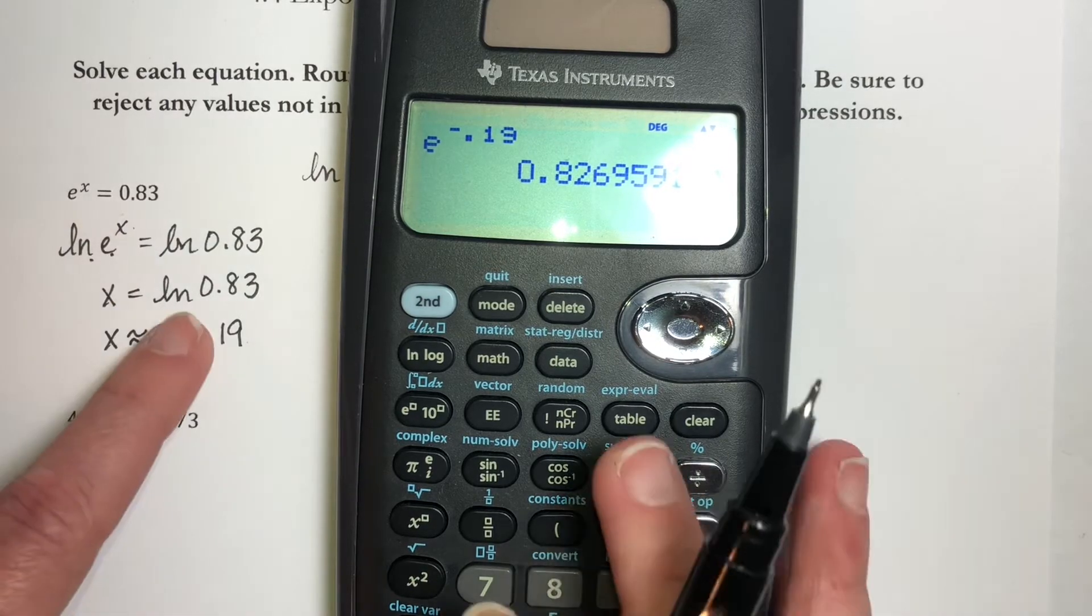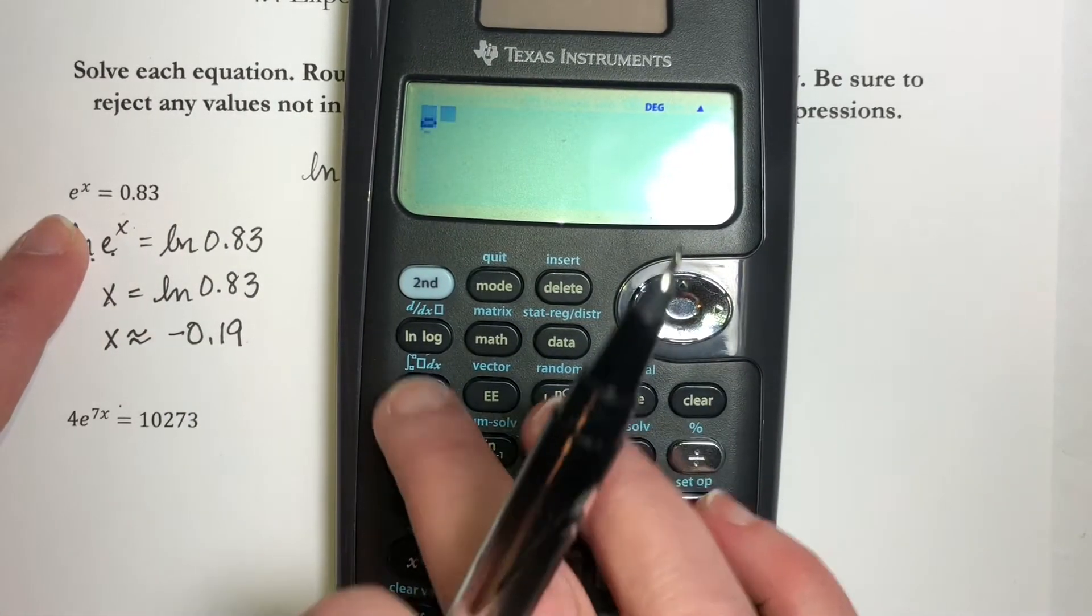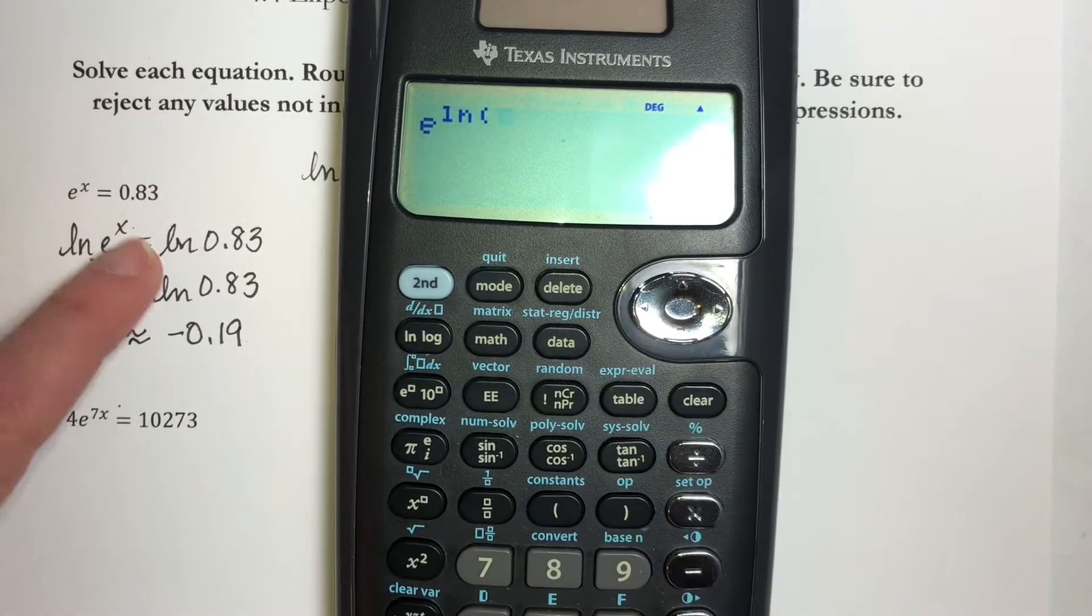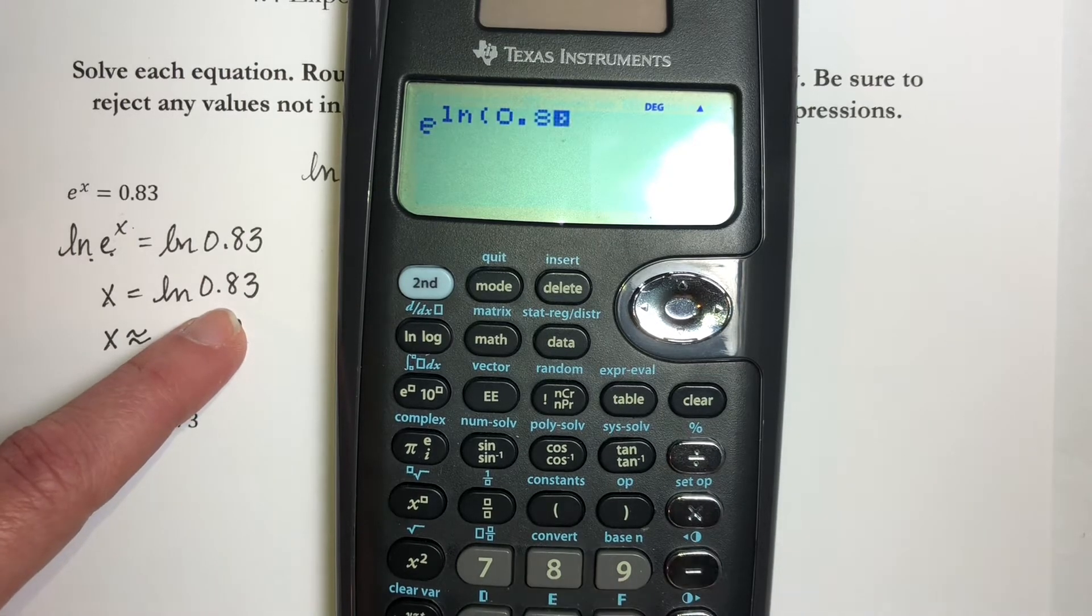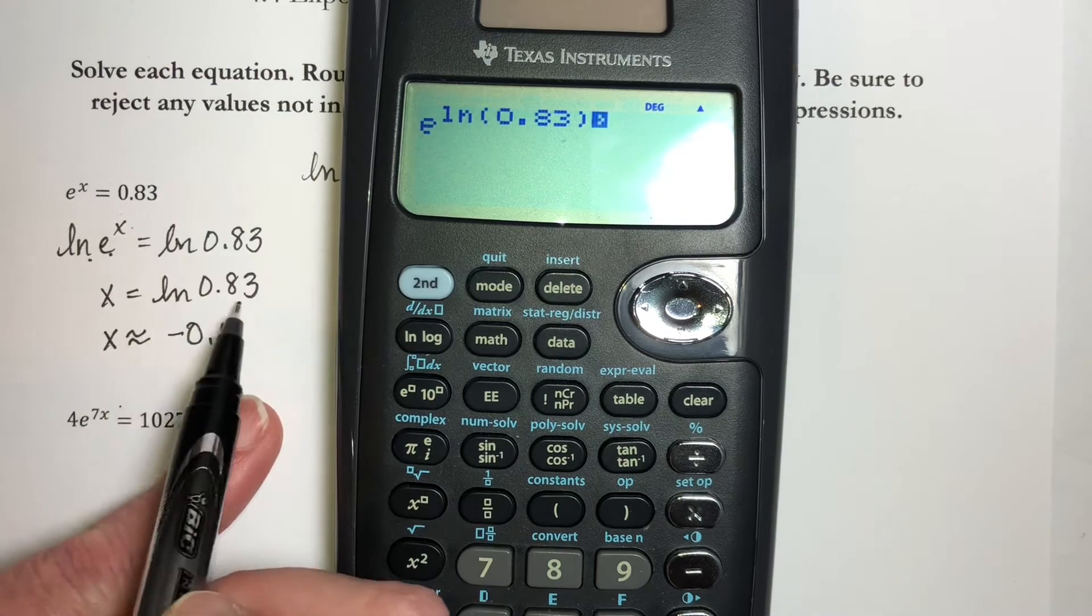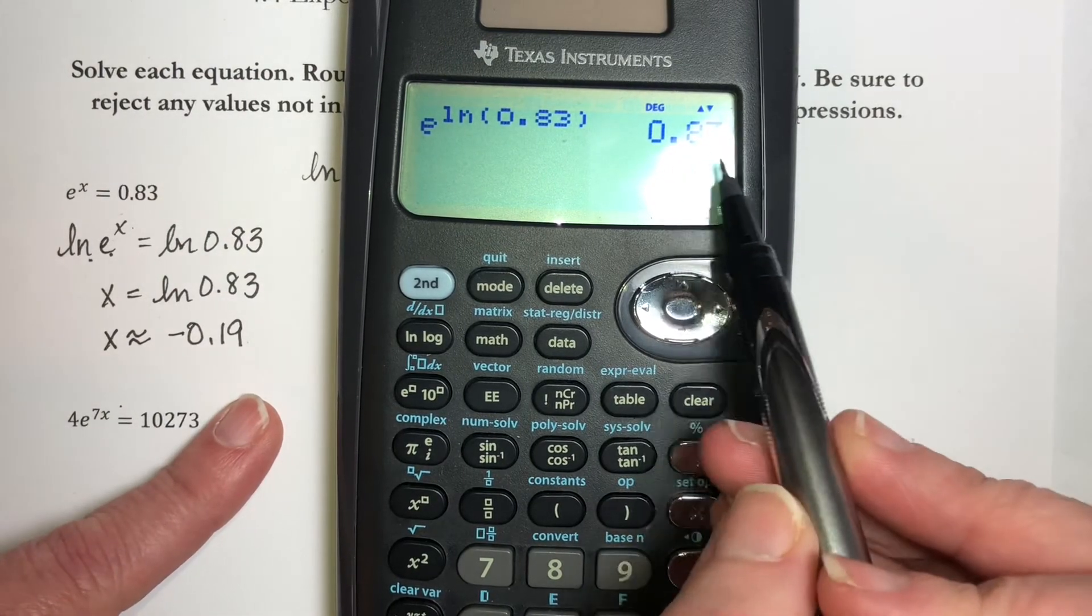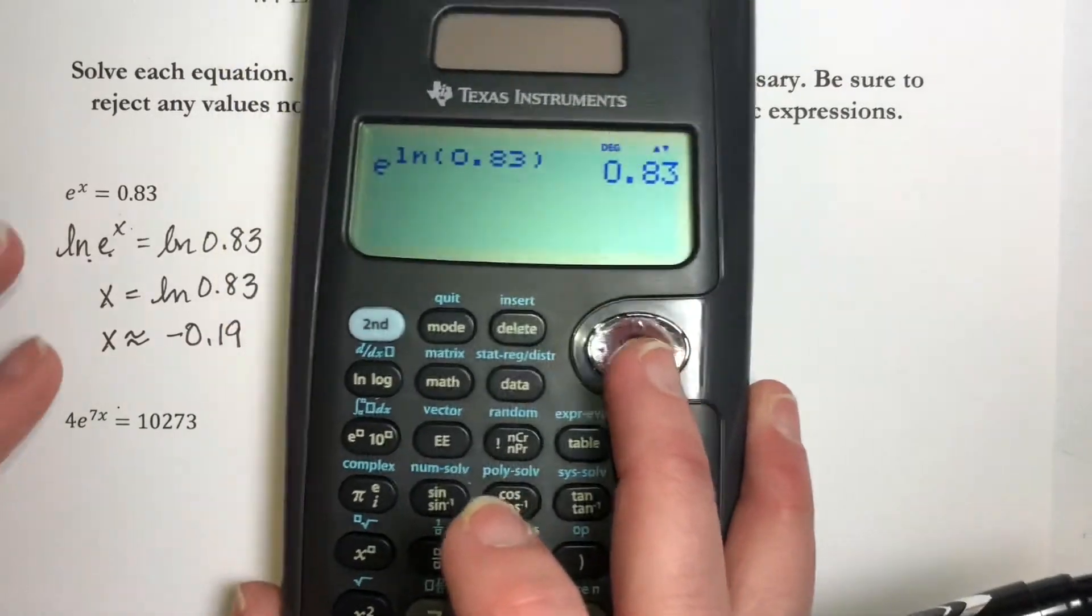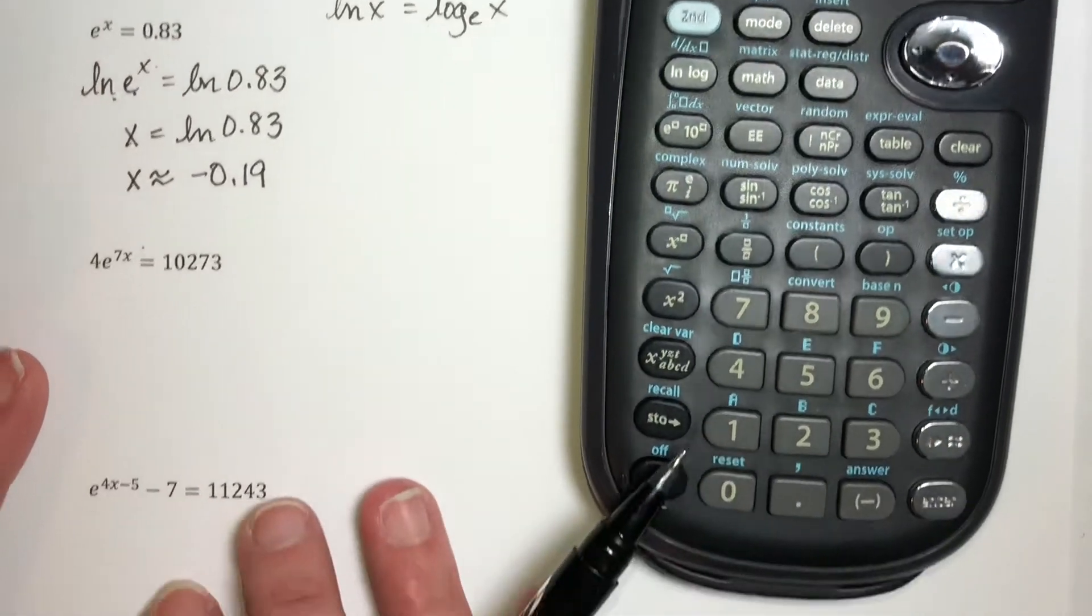You can also include your exact answer if you want to. So if I did e^(ln(0.83)), so what I've done is I've plugged my exact answer in for this x right here, I will see that it is exactly the right answer. So you can check in two ways.